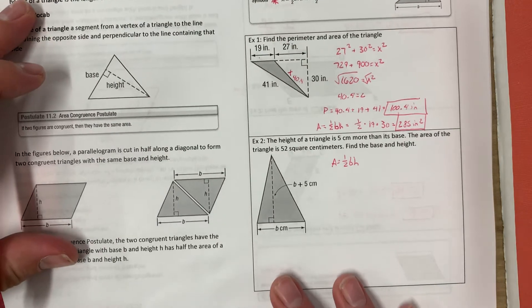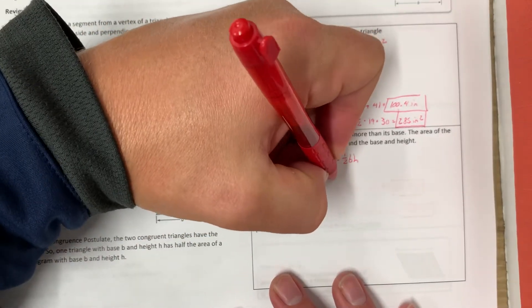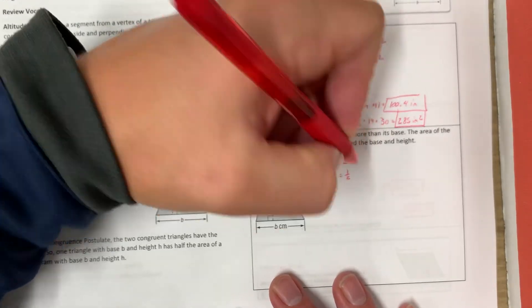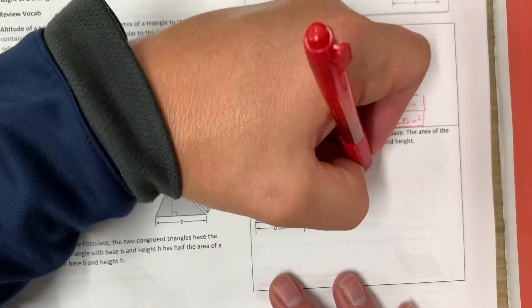So we have area equals one half base times height. We're trying to find the base and the height. So the area is 52 equals one half. The base is B. The height is B plus 5.